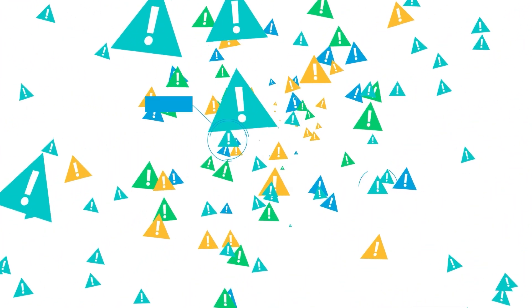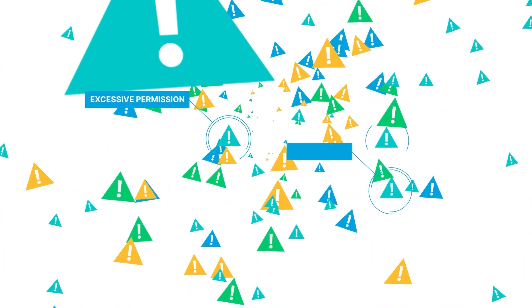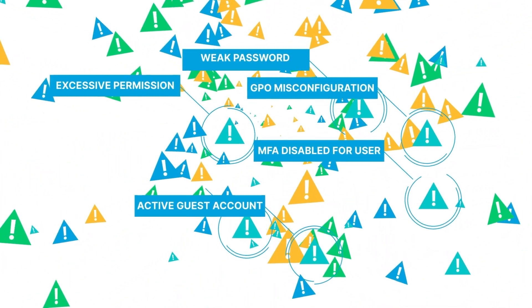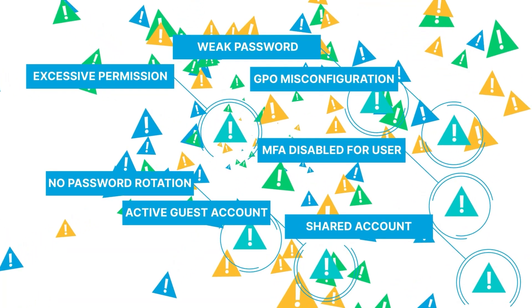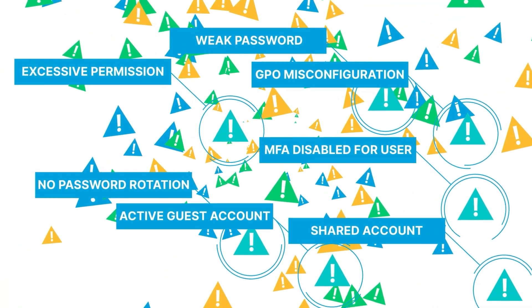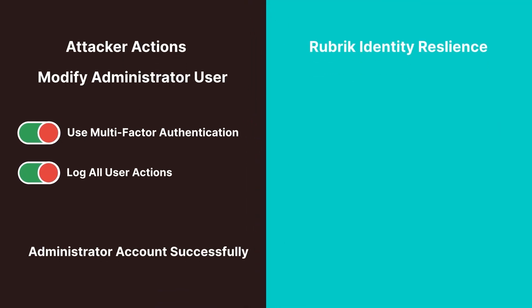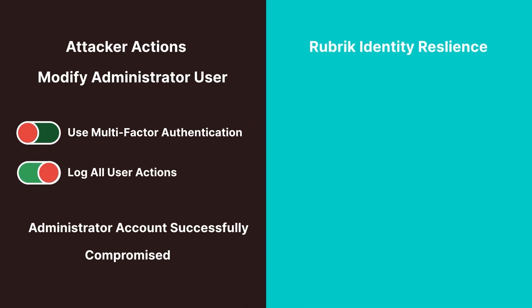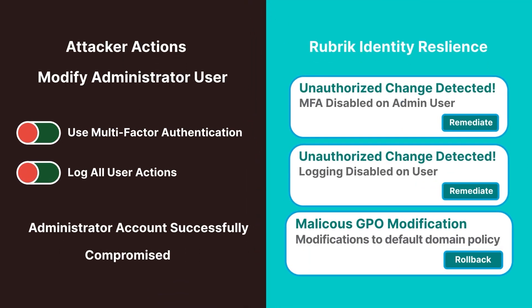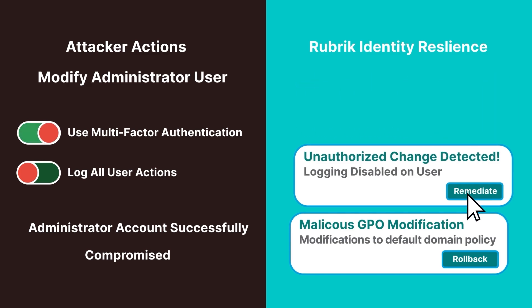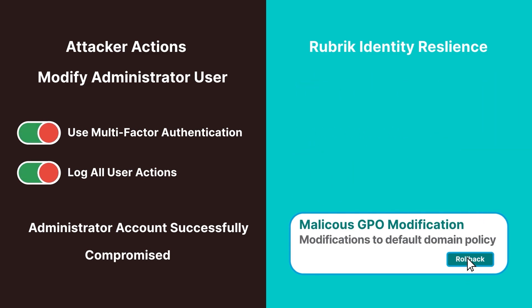Rubrik then identifies misconfigurations and risk within your identity platforms, allowing you to take proactive remediation steps to mitigate risk before an attack takes place, all from within the Rubrik UI. When critical, unauthorized changes are made, Rubrik provides alerts, allowing organizations to easily revert those changes back to a known good state.